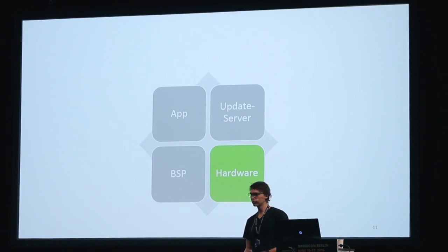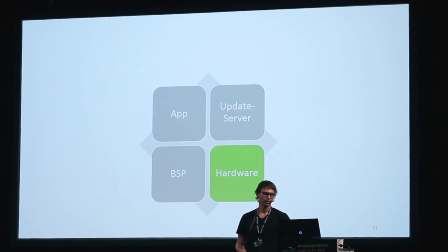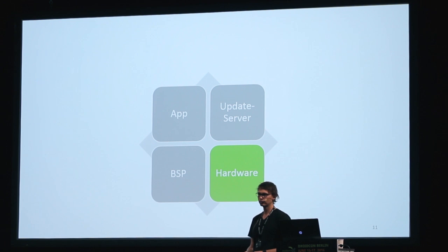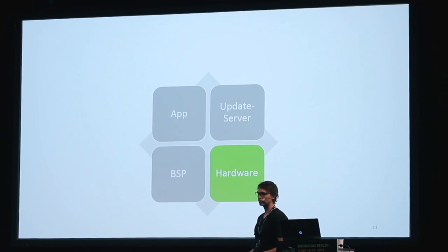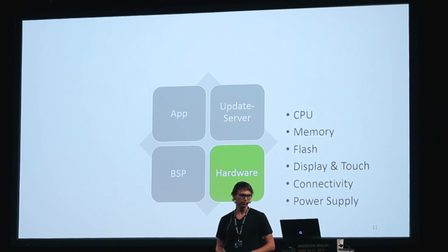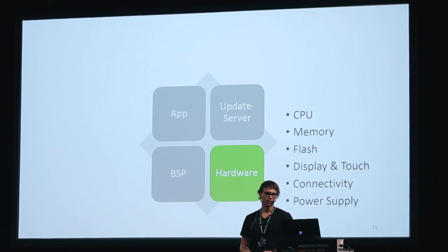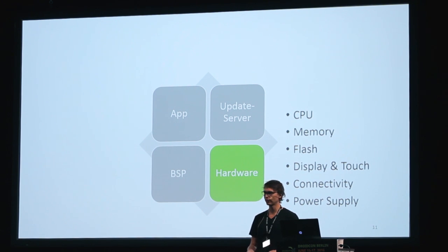The four parts required to build your own custom device are mainly the hardware, your own Android OS which matches your hardware, your app, and some kind of update infrastructure. For your hardware, you have to find the CPU, the memory, the flash, display touch, connectivity solutions, and the power supply.